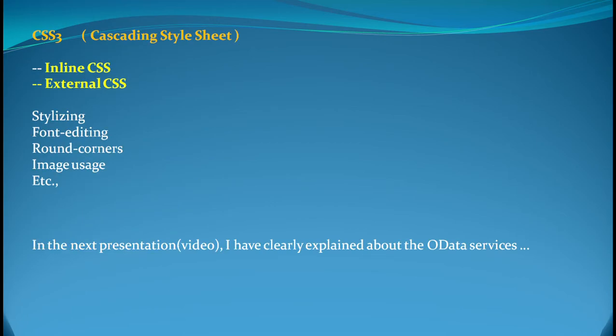CSS3 is for beautification — Cascading Style Sheet version 3. There are two variants: inline CSS and external CSS. CSS properties include styling, font editing, rounded corners, image usage, background images, and background color changes. CSS is essential because in UI5 and Fiori, the most important thing is the UI, which leads to UX — user experience. Only an enriched user interface can deliver the best user experience, and that is the end goal of an SAP UI5 Fiori consultant.